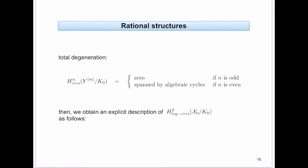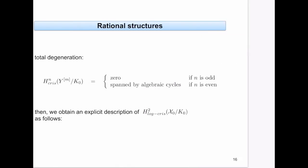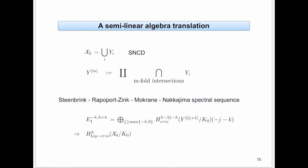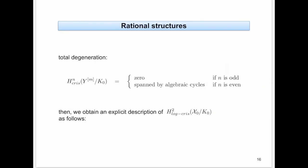If you plug this into the second crystalline cohomology using this Steenbrink-Rapoport-Zink-Mokra-Nakajima spectral sequence: the odd pieces are zero, and the even ones are spanned by algebraic cycles. This gives a filtration on the log-crystalline cohomology and, using ordinarity and the de Rham-Witt complex, you end up with a decomposition of the second log-crystalline cohomology.